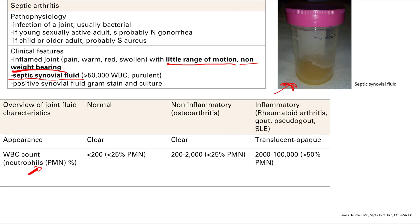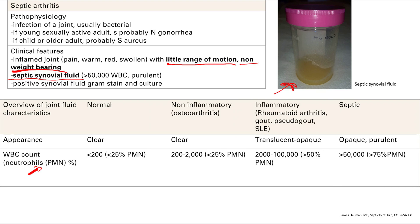Finally, the big one — septic arthritis, septic fluid. It's opaque and purulent, over 50,000 white blood cells, potentially more than 100,000, and a very high percentage of neutrophils. Very, very infected. That's it for our septic arthritis talk.